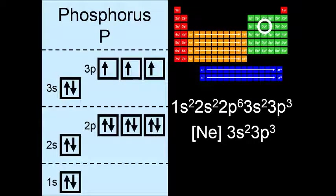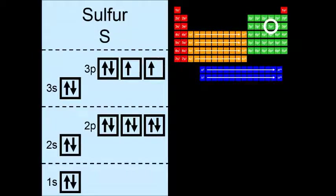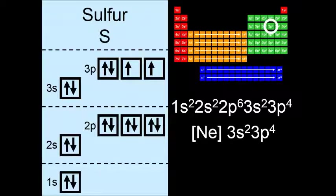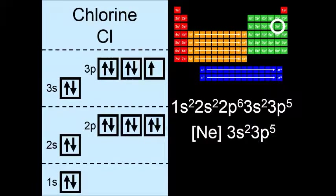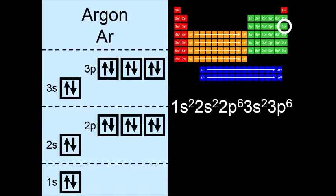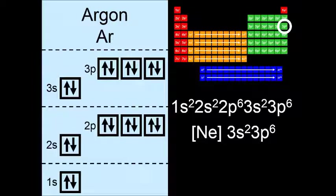And now we can double up the electrons in the orbitals from sulfur to argon. So here's sulfur and chlorine. And then finally, we get to the next noble gas, argon. So 1s2 2s2 2p6 3s2 3p6.